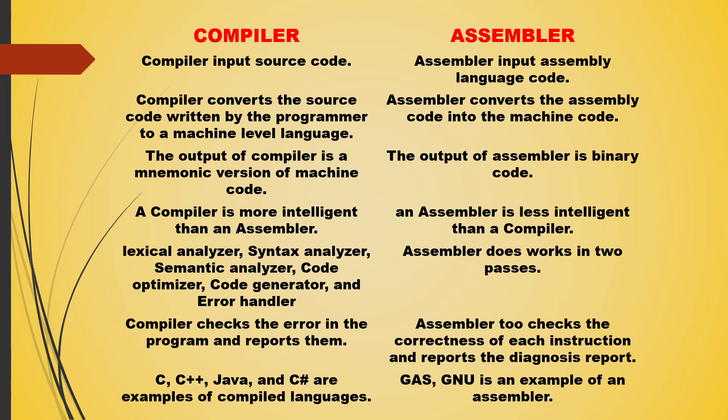The next point of difference is the compiler checks the errors in the program and reports them, while the assembler checks the correctness of each instruction and reports a diagnosis report.